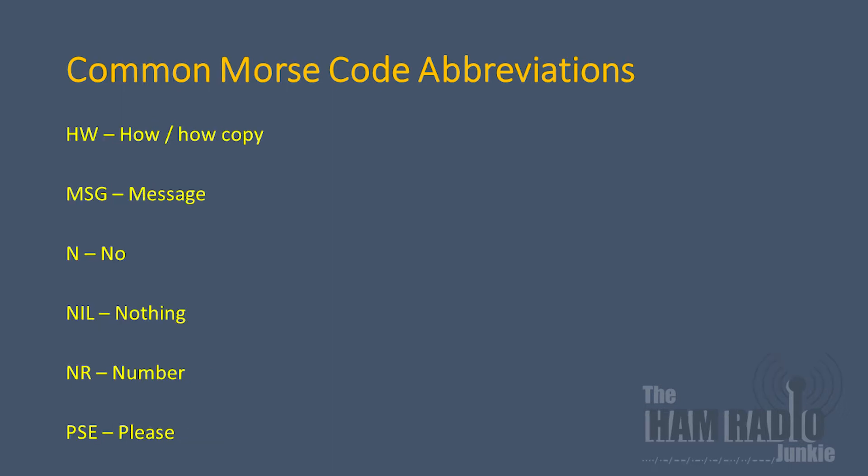It's interesting to note that H-W for 'how' may then have after it C-P-Y, as in 'how copy'. This is an indication of another station wanting to know how you're receiving them, or if you've received them at all. You'll also note that N-R is 'number'. You'll see this during contests where stations will send N-R and then the number of the contact.